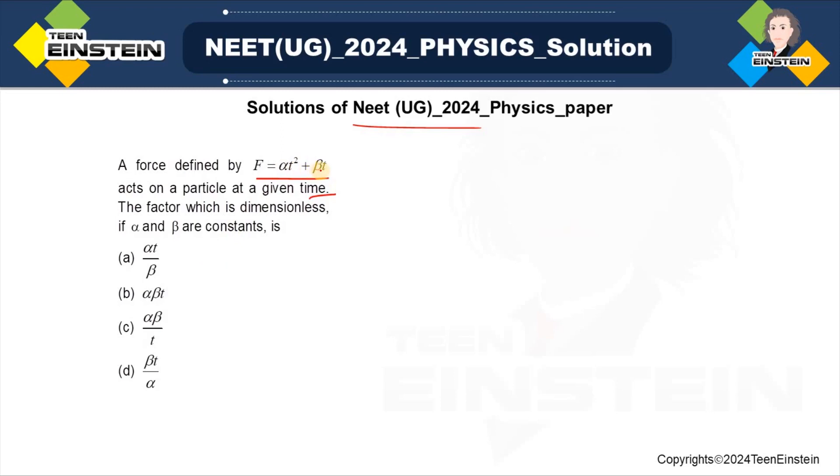See, alpha and beta are constants, but they are not dimensionless constants. They will have dimension.